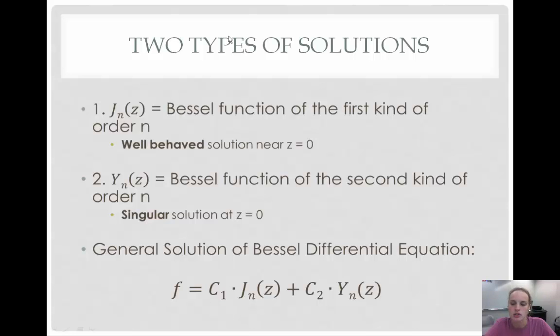The second one, y sub n of z, is the Bessel function of the second kind of order n. This is when the solution is singular at z equals zero. So, the general solution for these two solutions is the Bessel differential equation f equals c1 times j sub n of z plus c2 times y sub n of z.